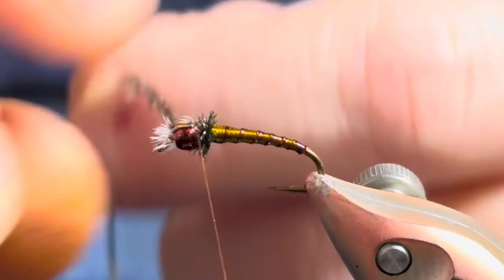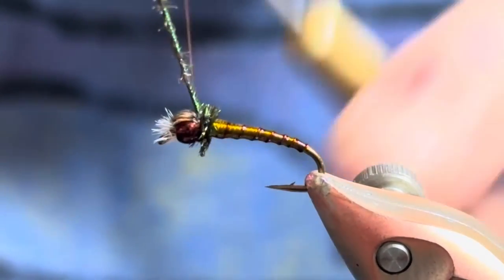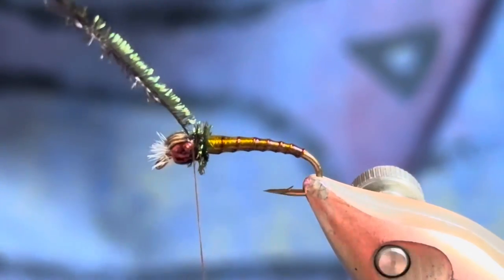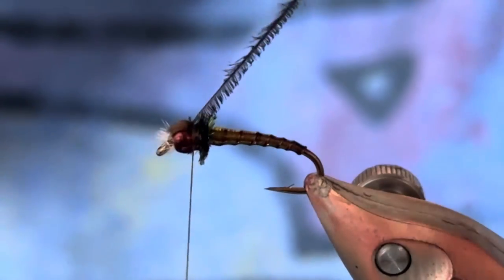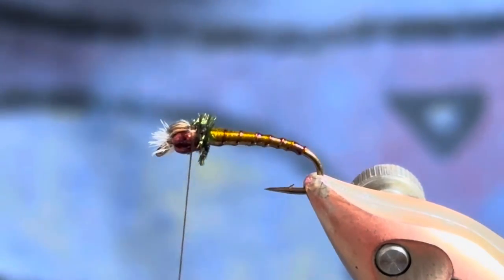But this one I've got just a piece of natural and I'm just going to wrap this maybe three or four wraps. It looks good enough there. And then I'll capture this herl, pull and just nip away.